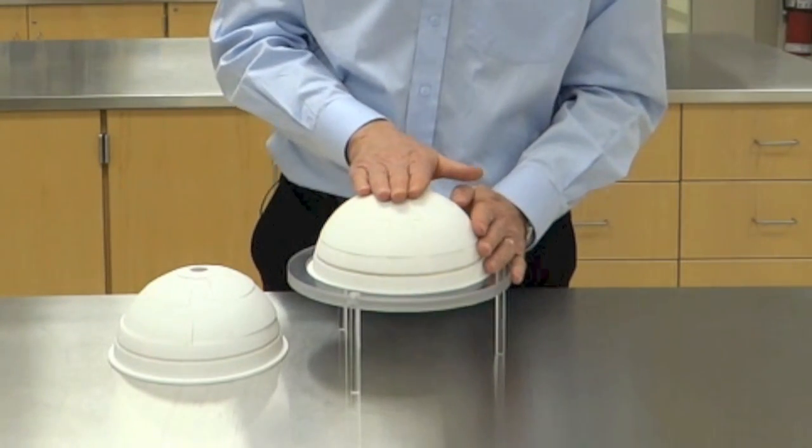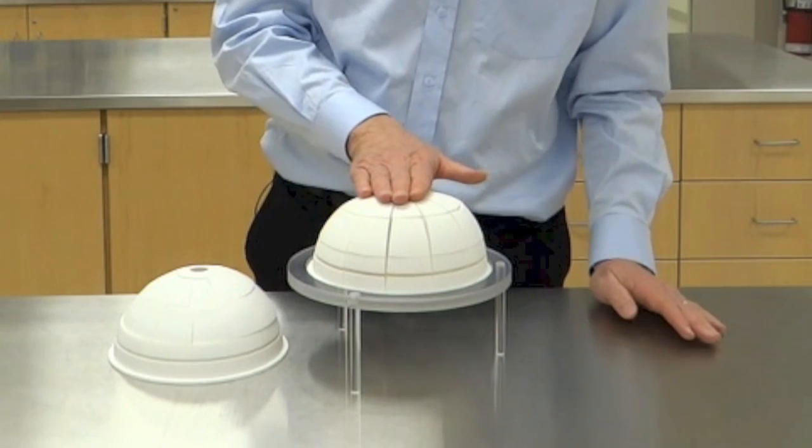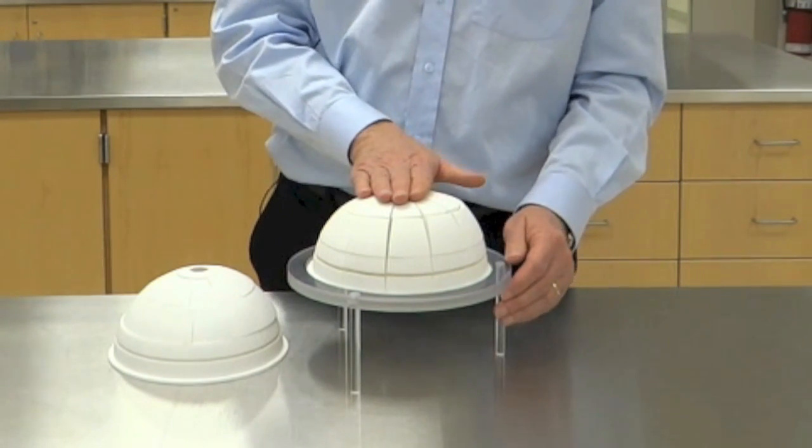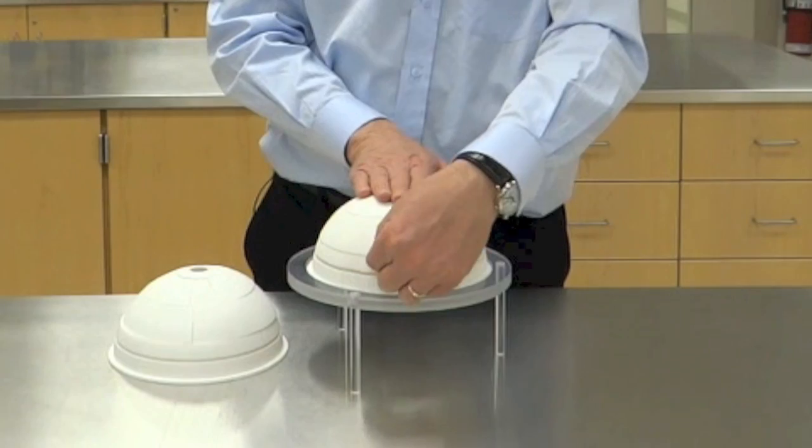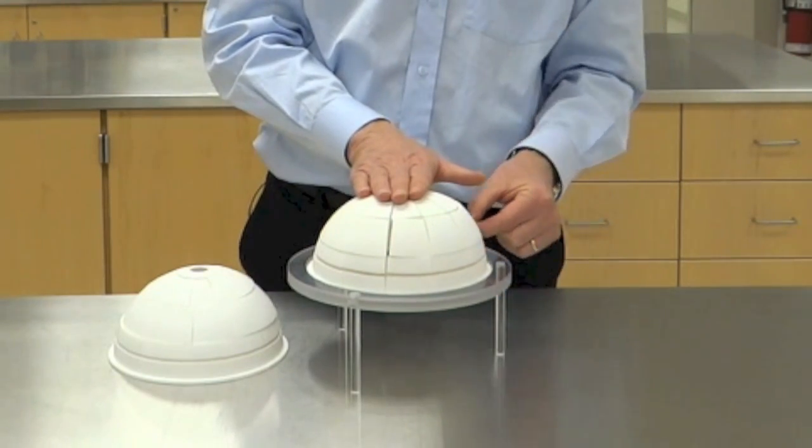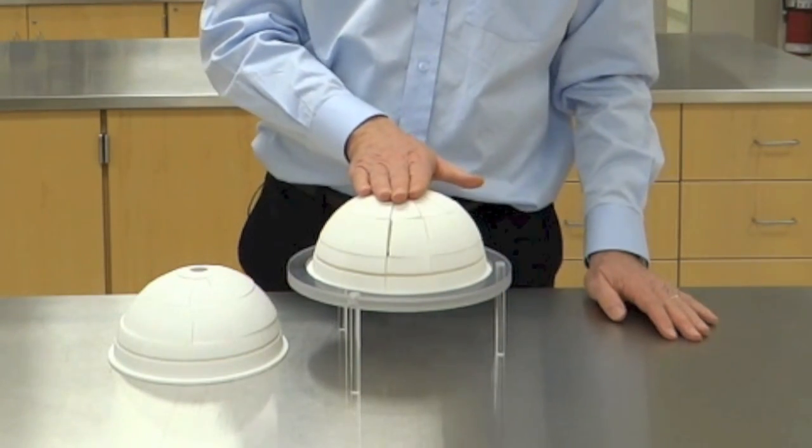If this was made of masonry, you can imagine that this would fall down as a result of that loading. What they do in many real domes is to put steel bars or steel reinforcing in the hoop direction so that this cannot happen.